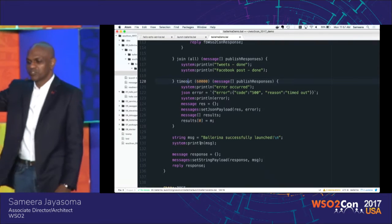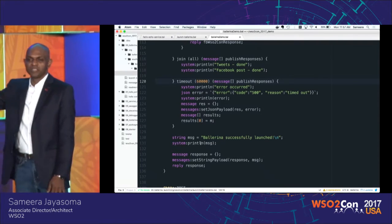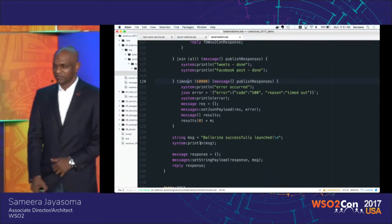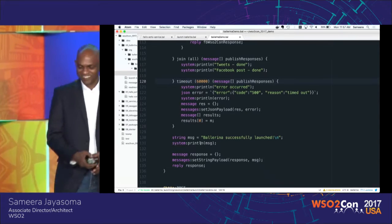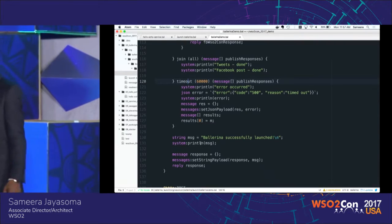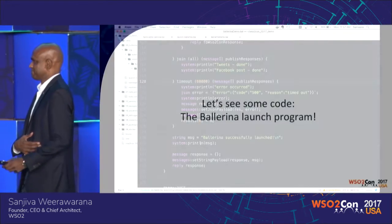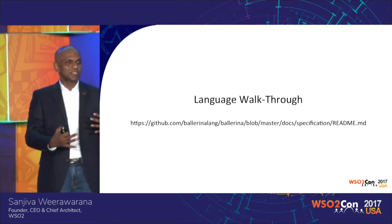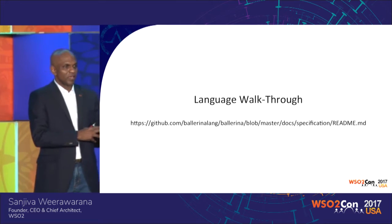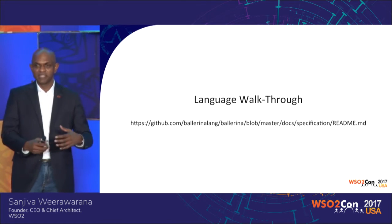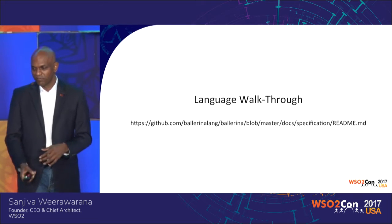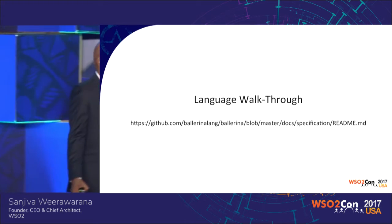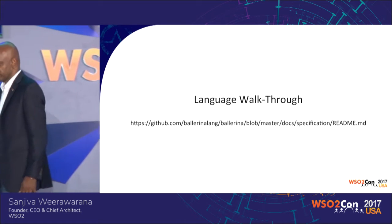By the way, this particular code was shown using Atom, and this is using the Atom plugin we've written for Ballerina — that's the one doing the syntax highlighting for Atom. Let me walk you through the language to give you a sense of it. I'm not going to go through it in a lot of detail, but enough to give you a fairly good understanding. The GitHub repo is up — you can access it right now, and the spec is there as well.